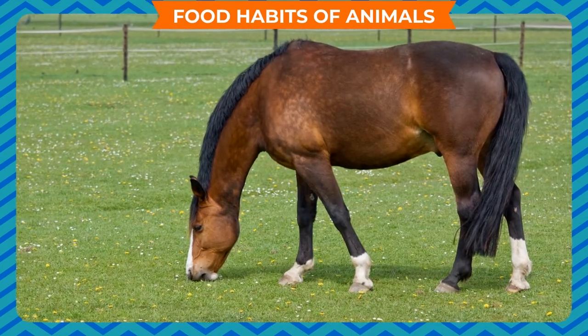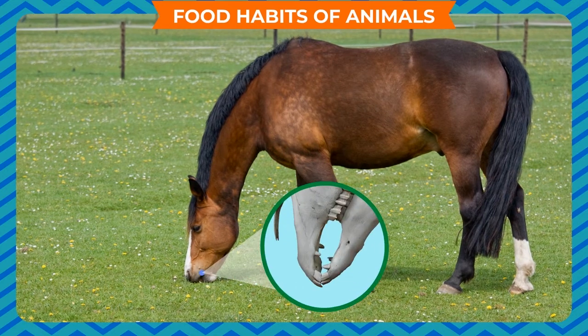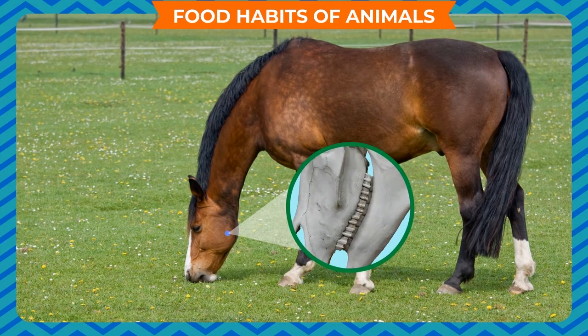Animals that eat only plants are called herbivores. They have sharp front teeth to bite their food and broad back teeth to grind the food easily.